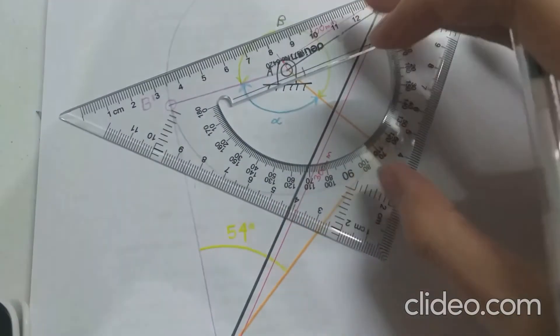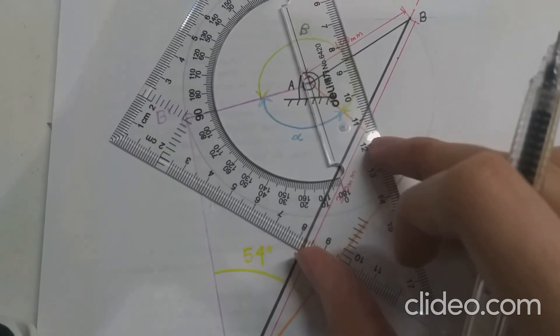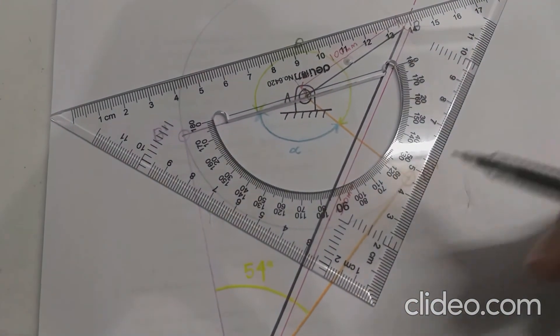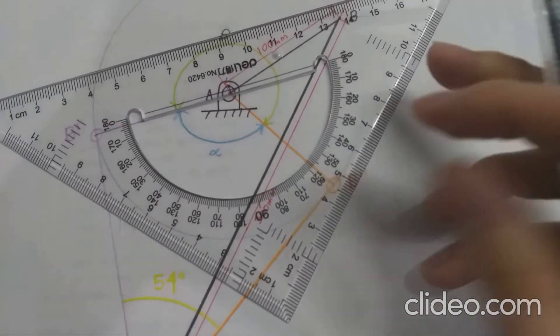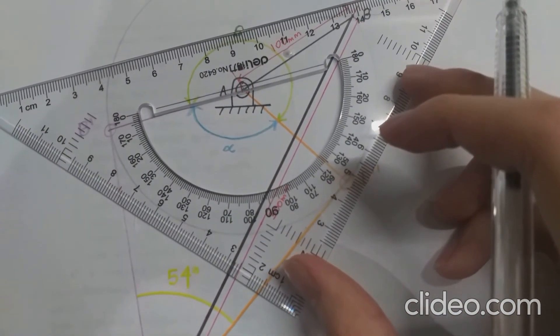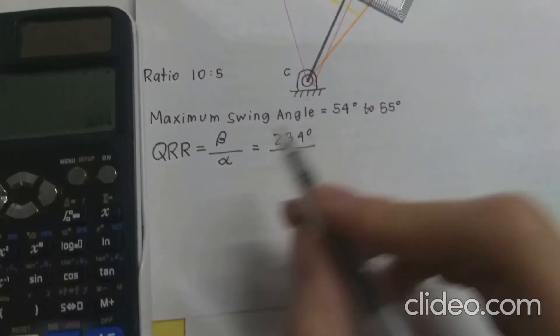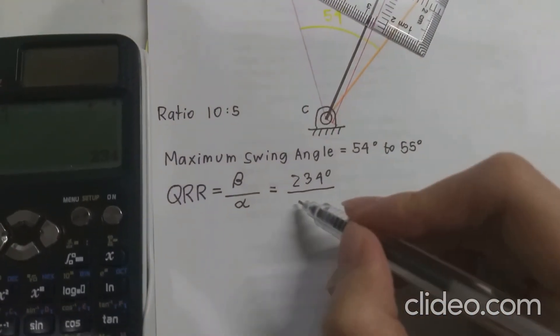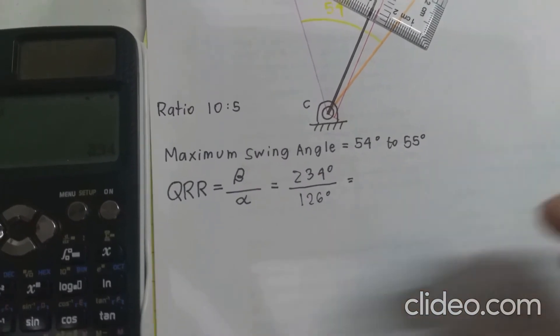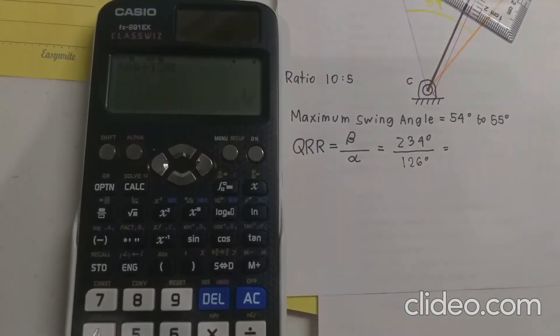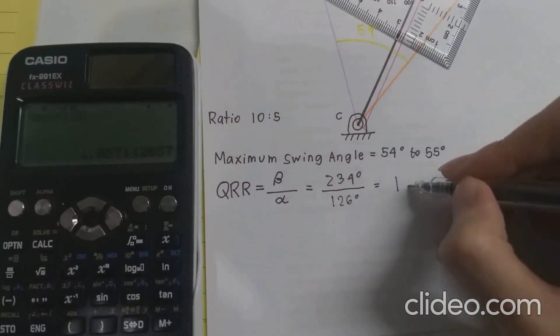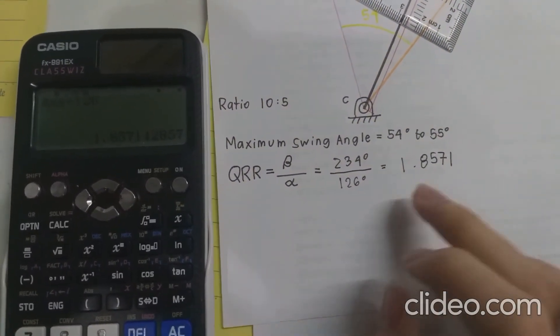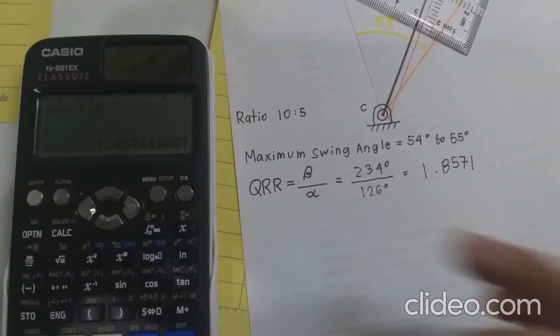Let us measure now our angle alpha. We can actually start here from the 0. And looking at it, we have around 126 degrees. So angle beta over angle alpha is 234 over 126 degrees. And that should equal 1.8571. And that's our quick return ratio.